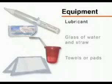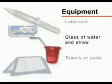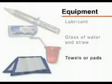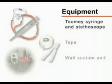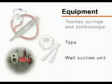Obtain a lubricant, a glass of water with a straw, towels or blue pads, a 60cc catheter tip Toomey syringe, a stethoscope for tube confirmation, tape, and a wall suction setup.